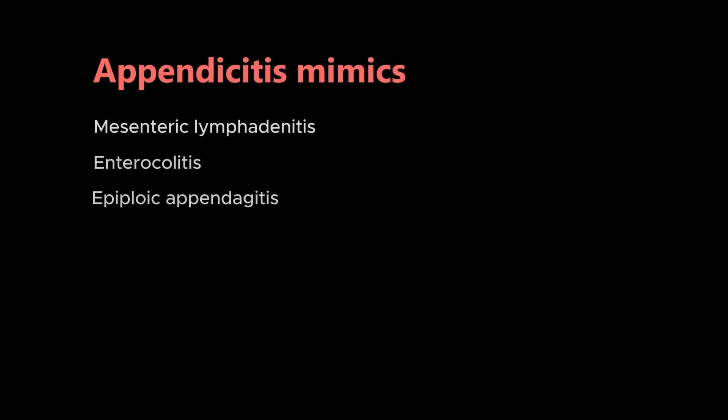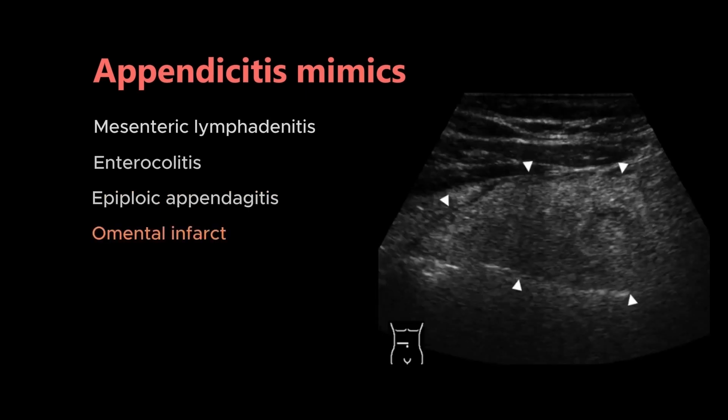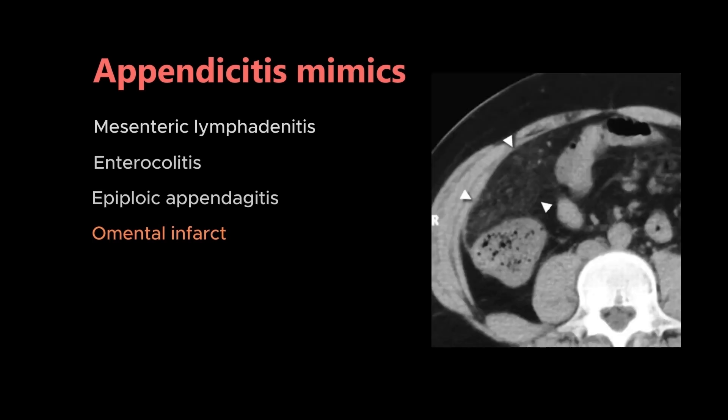In omental infarct you can see inflamed intraperitoneal fat without any underlying bowel wall thickening or other cause, and it shows omental caking on CT.